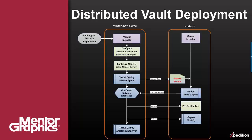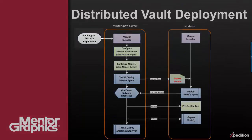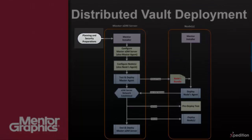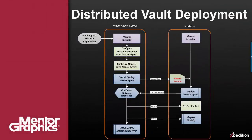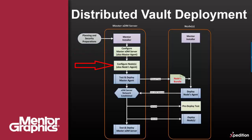This is a flow diagram of the workflow required to deploy a distributed vault. Once you finish the planning phase and the preparations, such as hardware and security certificate acquisition, you use the Mentor installer to install XDM server software on the targeted master XDM server host machine, and to install the XDM server node software on each one of the node host machines. Then use the configuration manager on the master host machine to configure the master XDM server as well as each one of the nodes. Once configuration is done, you should deploy an agent on the master host machine. The agent deployment process also generates bundles of configuration and essential files used during the deployment of the agents for each node.